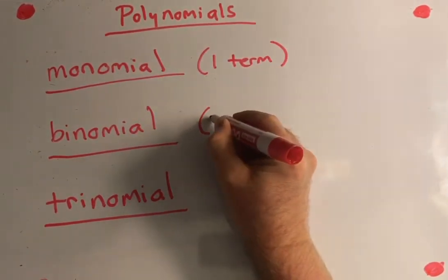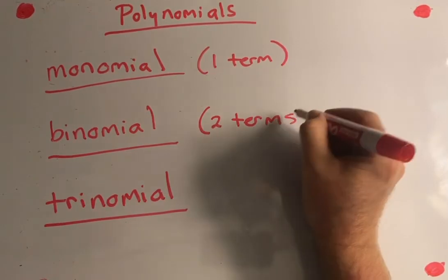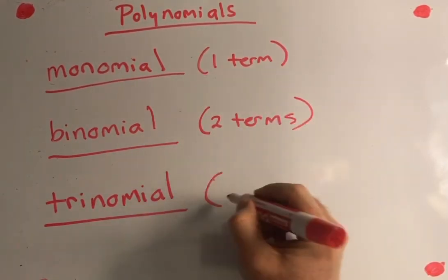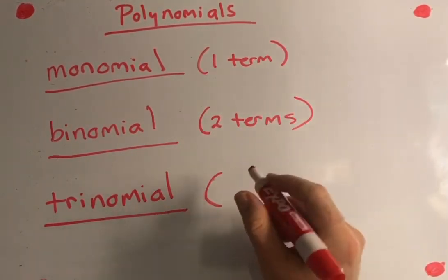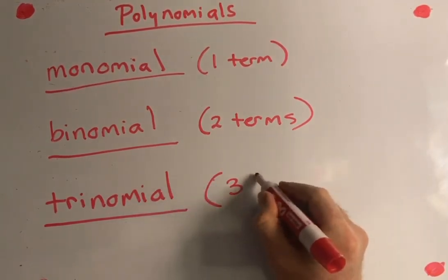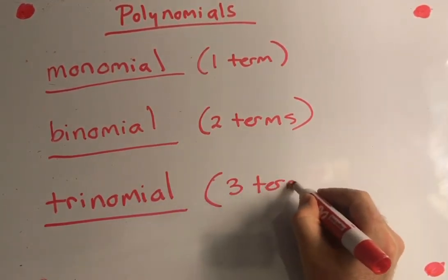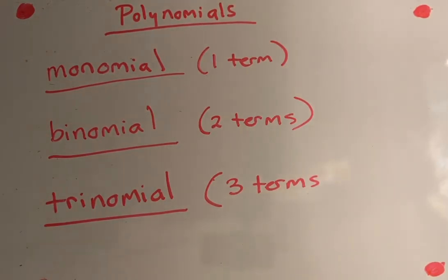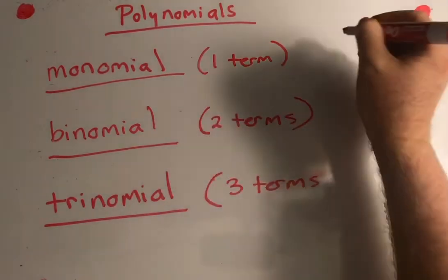A monomial has one term. A binomial, like a bicycle, has two terms. And a trinomial, like a triangle or a tricycle, has three terms.